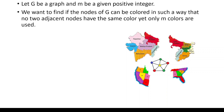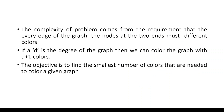If we reach a point where we cannot assign a color to a vertex without violating the coloring rules, we backtrack and try a different color for the previous vertex. The complexity comes from the requirement that every edge's endpoints must have different colors. If d is the degree of the graph, we can color it with d plus 1 colors. The objective is to find the smallest number of colors needed to color any given graph.